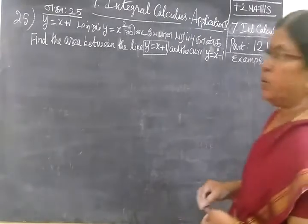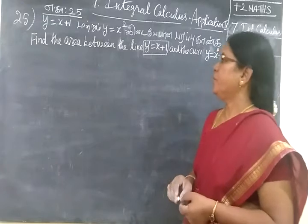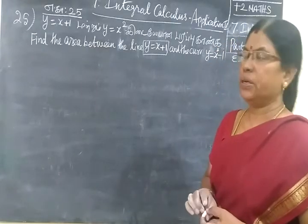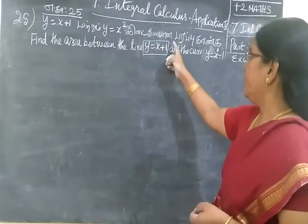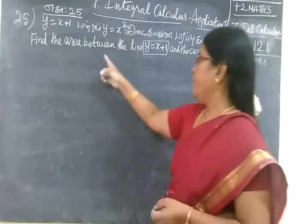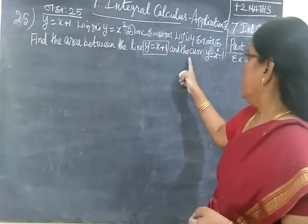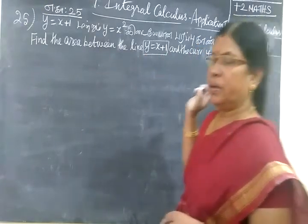Next, we see problem 151. y equal to x plus 1, but y equal to x square — find the area between the line y equal to x plus 1 and the curve.